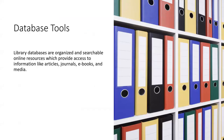So once you have your keywords, it's now time to jump into the databases. Library databases are organized and searchable online resources which provide access to information like articles, journals, e-books, and media. There's more information than you could possibly need in these databases, so they have included tools to help you find what you need.